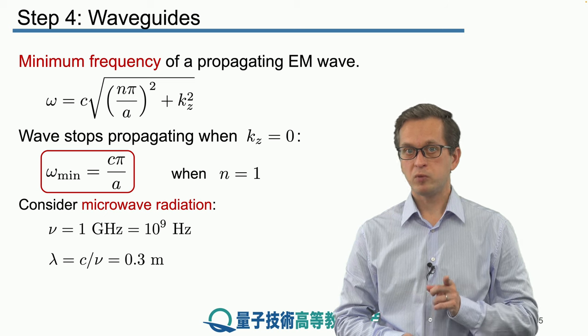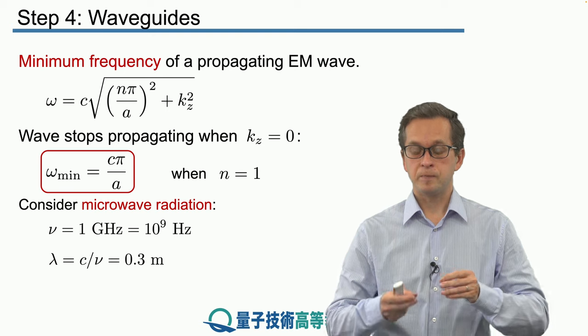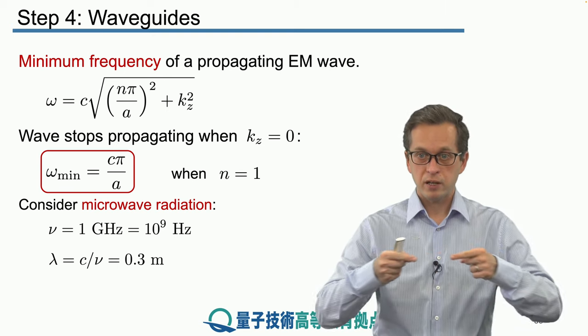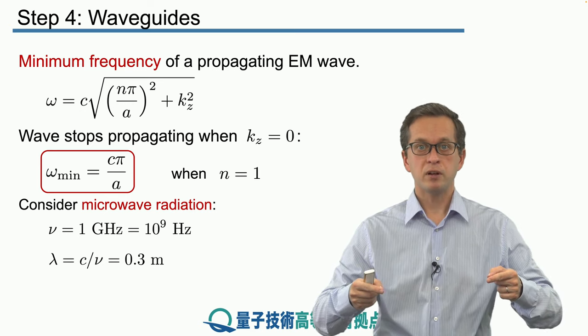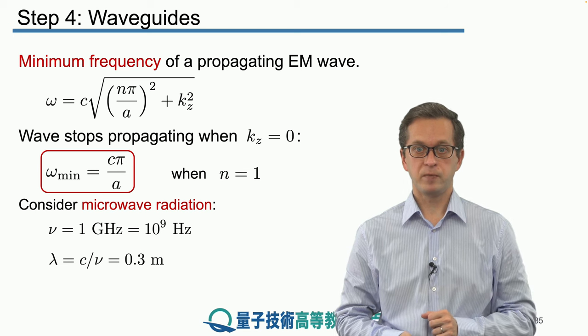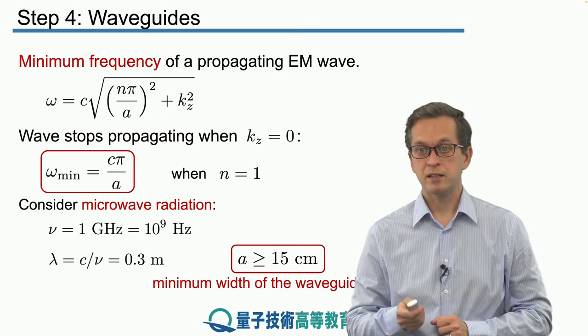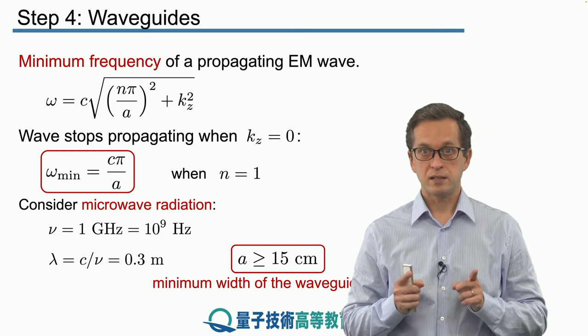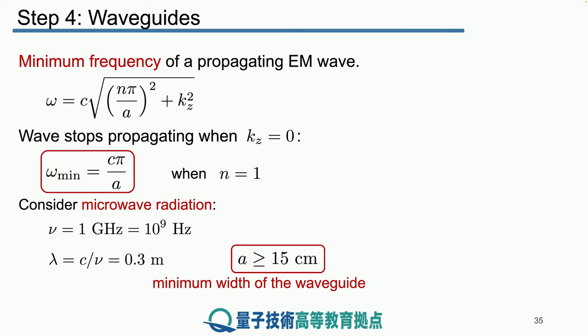So, if we want such a wave to propagate through the waveguide, we must be able to fit at least half a wavelength of radiation in the direction that's perpendicular to the plates to set up a standing wave. In our case, it was the x direction. Meaning that the separation between the plates must be at least half of that. In other words, must be at least 15 centimeters. This is the minimum dimension of the waveguide for this particular frequency of radiation.